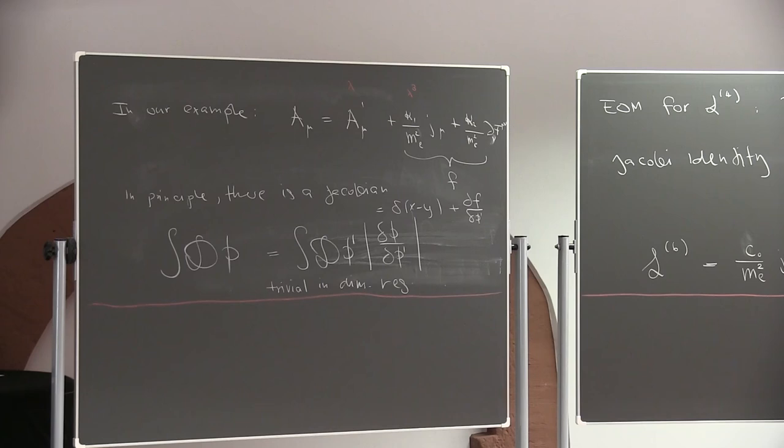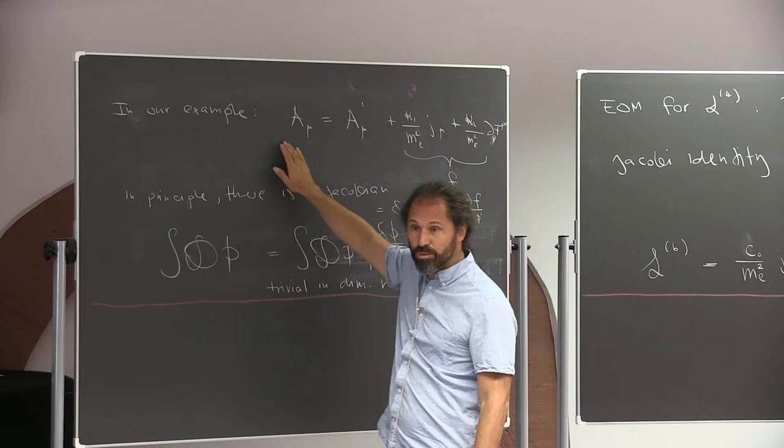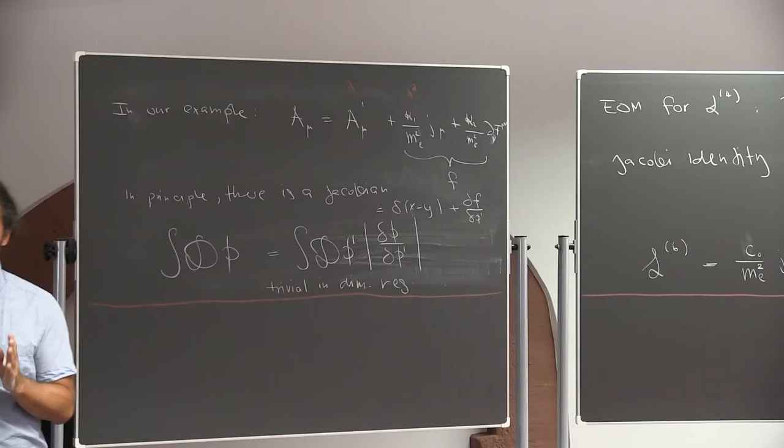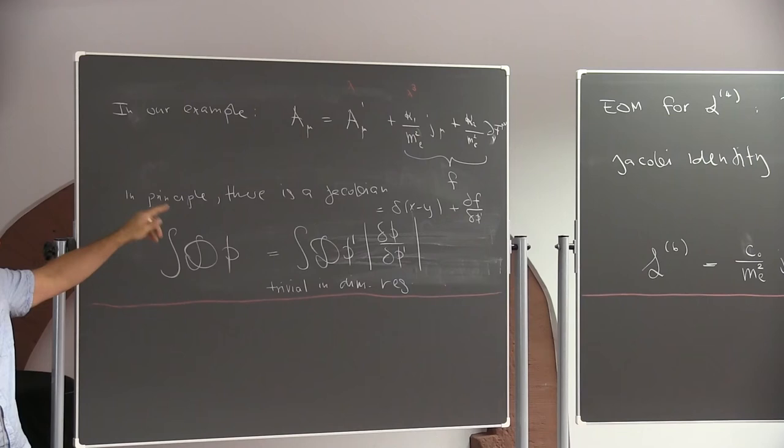The only thing I want here is on-shell amplitudes. It's true that if you really wanted to reproduce all the Green's functions of the field A, you should include all the dimension-6 operators and cannot get rid of them. But for on-shell scattering amplitudes, the field redefinition is valid.